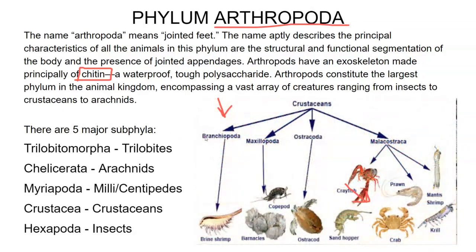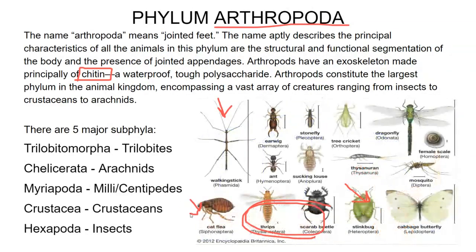Last but not least, we have hexapoda — hex meaning six, poda meaning foot, so six legs. This includes fleas, walking sticks, ants, any insect, beetle, or bug that has six legs is going to be in hexapoda, the six-leg family. As a side mention: horseshoe crabs are actually very closely related to arachnids. Their blood is actually blue because it contains copper-based hemocyanin — we have iron-based hemoglobin. We use this blue blood in the biomedical industry to detect endotoxins. They also have book lungs and eight legs like the arachnids do.